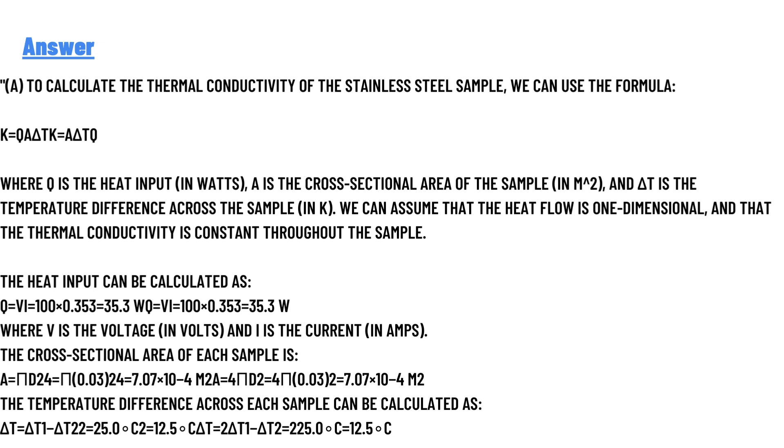Part A: To calculate the thermal conductivity of the stainless steel sample, we can use the formula given below, where Q is the heat input in watts, A is the cross-sectional area of the sample in m², and ΔT is the temperature difference across the sample in K. We can assume that the heat flow is one-dimensional and that the thermal conductivity is constant throughout the sample.